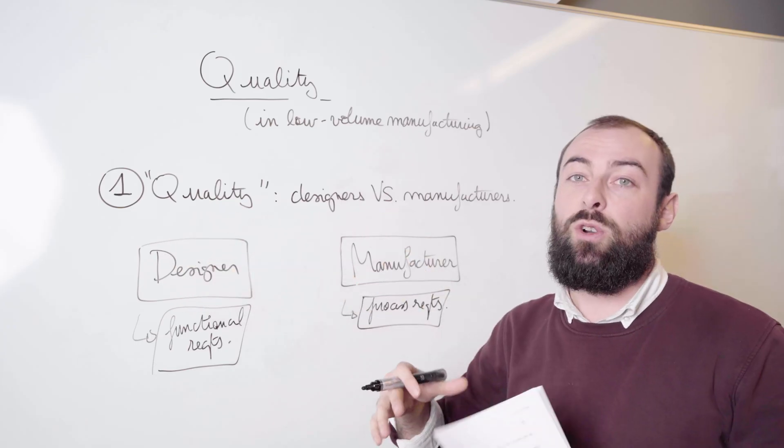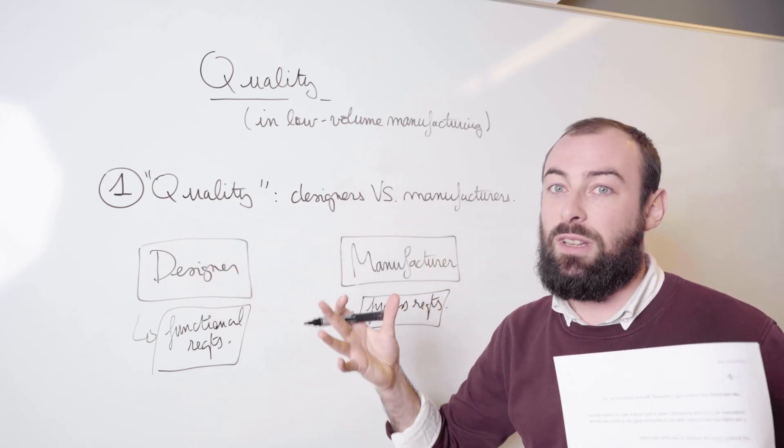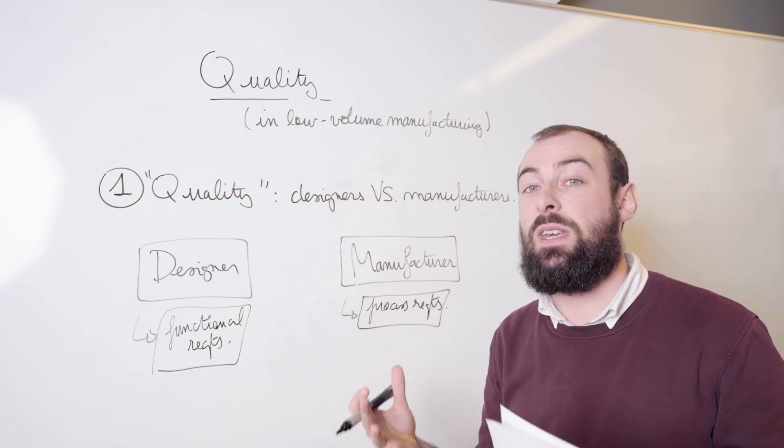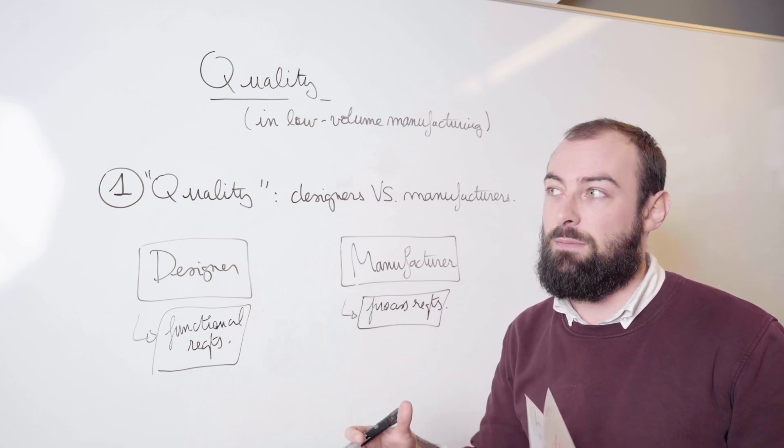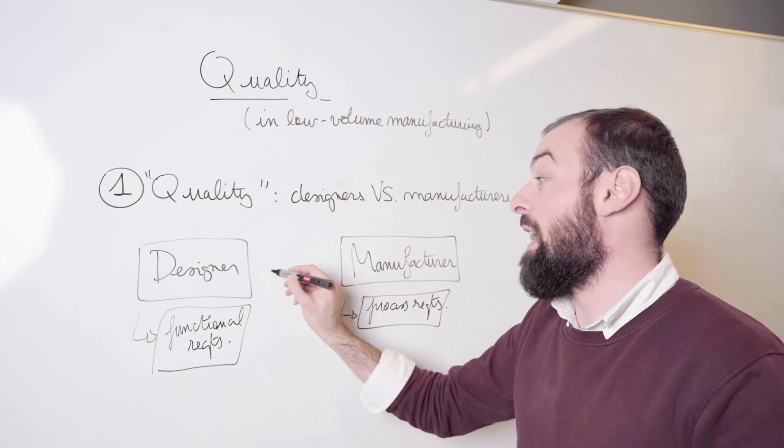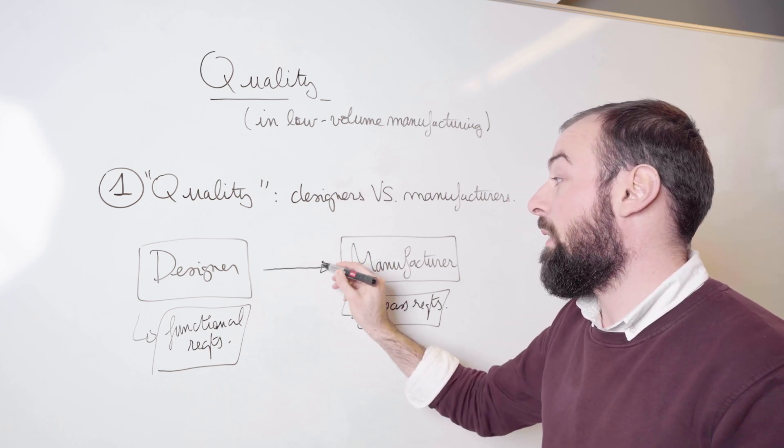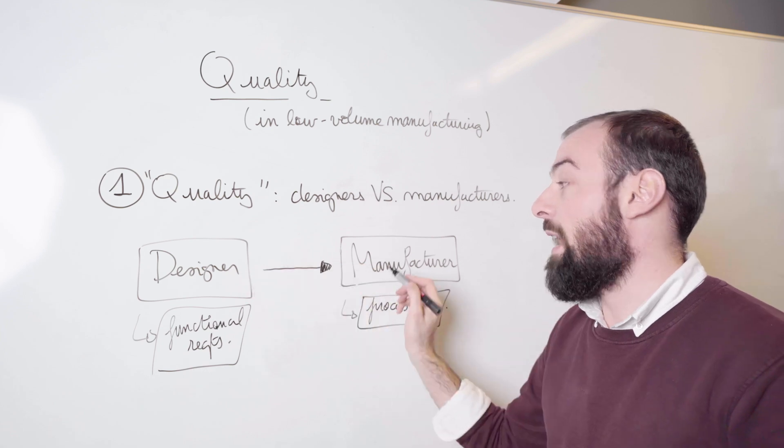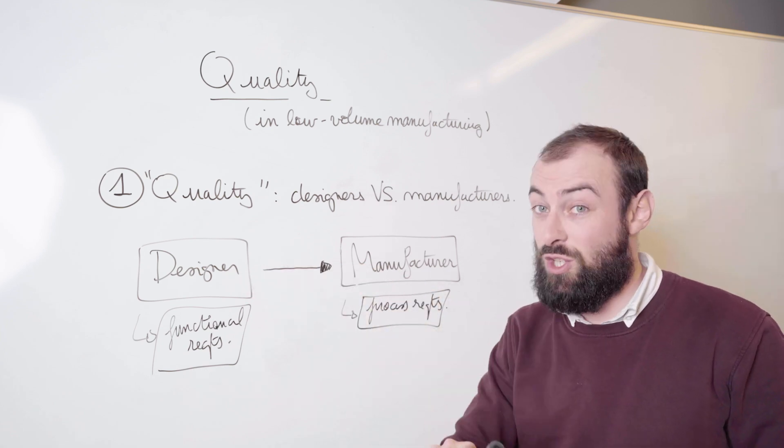The designer and the manufacturer are the two people at a very holistic level that are typically involved in the manufacturing and fabrication of a product. You have a very big step between the designer and the manufacturer in which you have a translation of information.